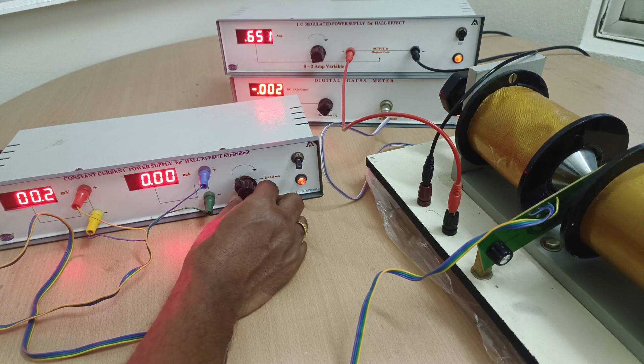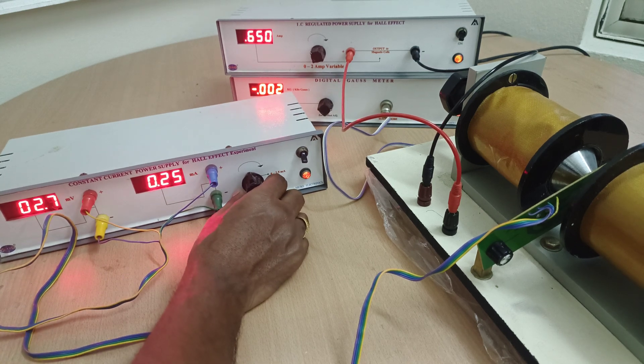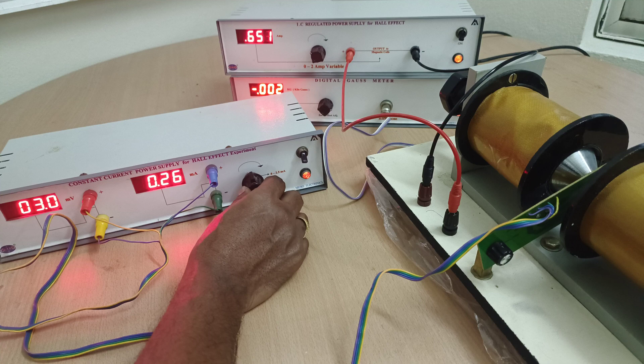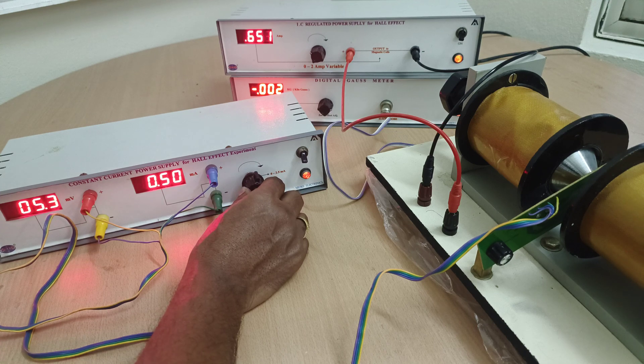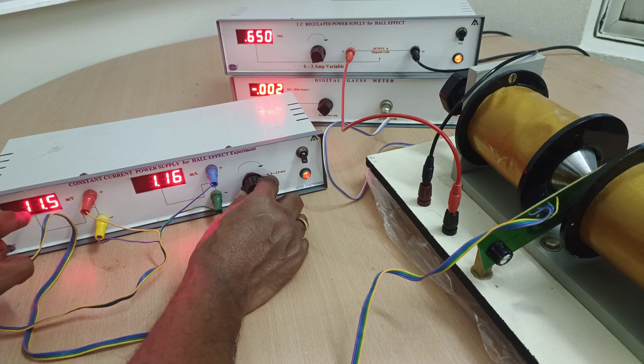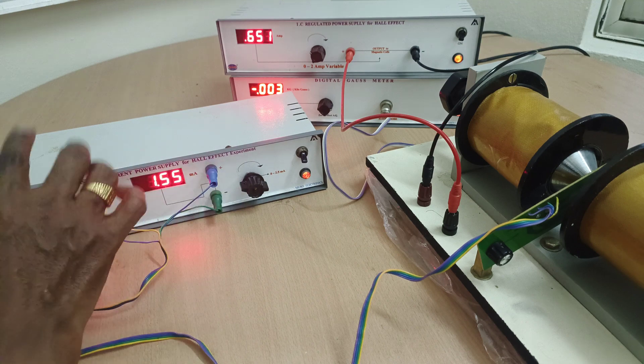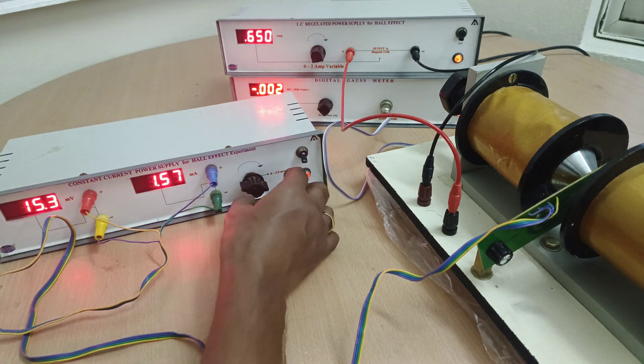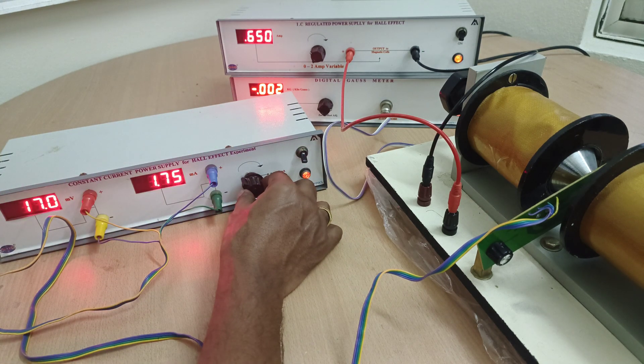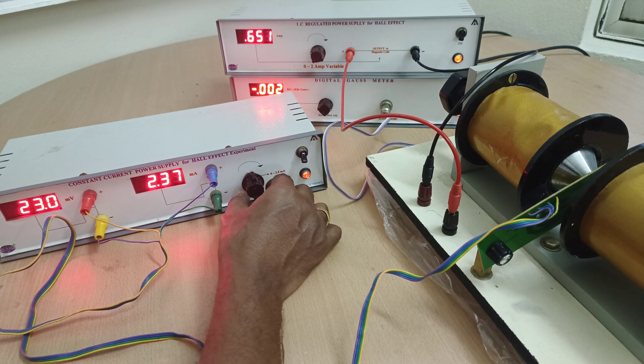The same way, take the readings, current versus voltage: 0.5, 1, 1.5. Note down the Hall voltage readings by changing current values. Hall voltage also will change, note down all these values. Write all these values in the tabular form. Now I will show you.